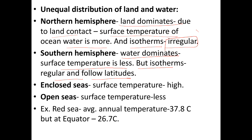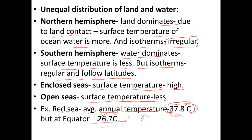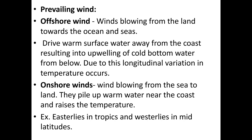In the Southern Hemisphere, because of water domination, isotherms are regular and follow latitudes. In enclosed seas, surface temperature is very high, while in open seas surface temperature is lower. For example, the Red Sea has an average annual temperature of 37.8 degrees Celsius, whereas at the equator the annual temperature is 26.7 degrees Celsius. Though the equator receives much energy, other factors also disturb the temperature, so the equatorial temperature is lower than the enclosed Red Sea.